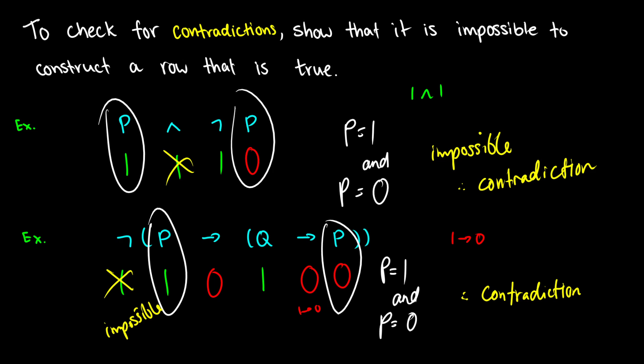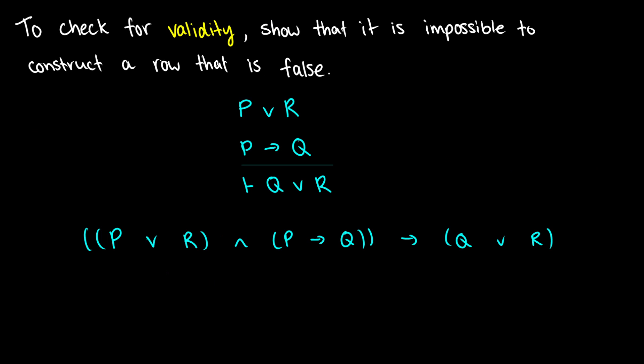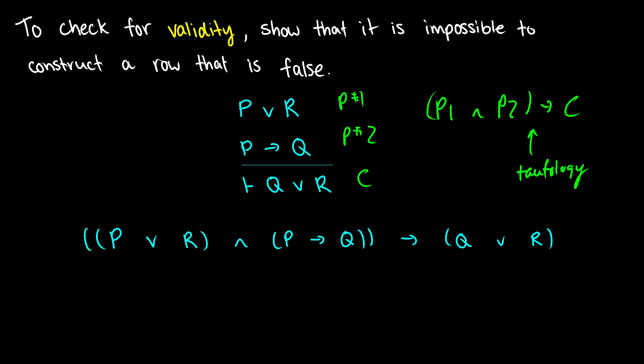Now, that's tautologies and contradictions. Because we know how to do those, we can now do validity. Remember, a valid argument is basically just a tautology in disguise. What you do is you take premise 1, premise 2, the conclusion, and put them together: P1 ∧ P2 → C. This should be a tautology according to the definition of a valid argument. Therefore, all we have to do is assume there's some false row and show it's impossible to construct. That'll be a billion times faster than what we did in the previous video with the giant grid of over 100 ones and zeros.